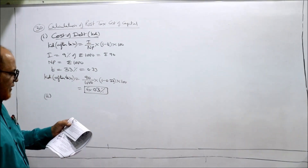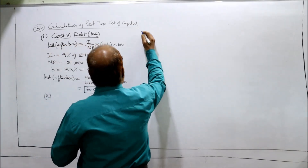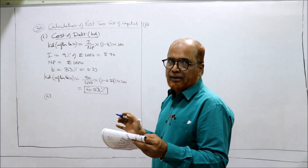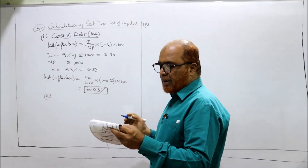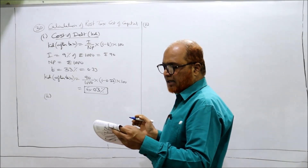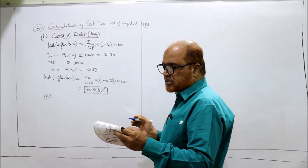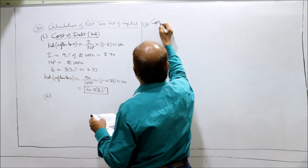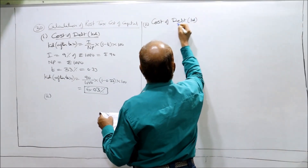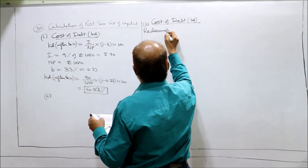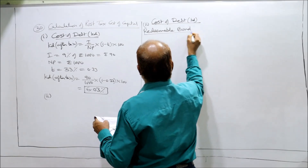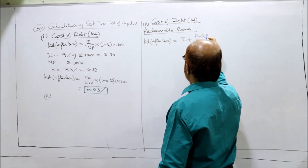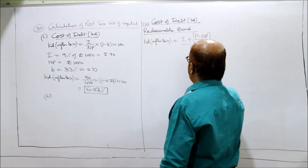Second bit: the par value of the bond is 1000. The company issued it at 10% coupon, issued at 945, flotation cost incurred is 3%, and the bond's life is 8 years. So redeemable bond, find the after-tax cost of debt. KD after tax for redeemable bond is equal to I plus P minus NP by N, divided by P plus NP divided by 2, into 1 minus T into 100.